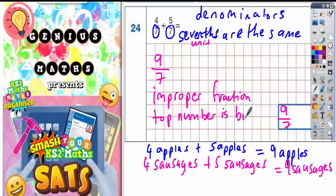The top number is bigger. Now what you should really be doing is converting this into a mixed number. And to do that, you treat it as a divide. Nine sevenths means nine whole ones divided by seven. So nine divided by seven is one with two remainder.